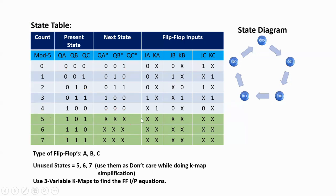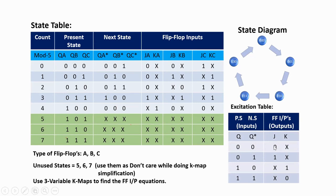To find the flip-flop input values depending on present state and next state, we use the JK flip-flop excitation table. In the JK flip-flop excitation table, the inputs are present state Q and next state Q*. Here we have three flip-flops A, B, and C, so the flip-flop inputs are JA, KA, JB, KB, JC, and KC.